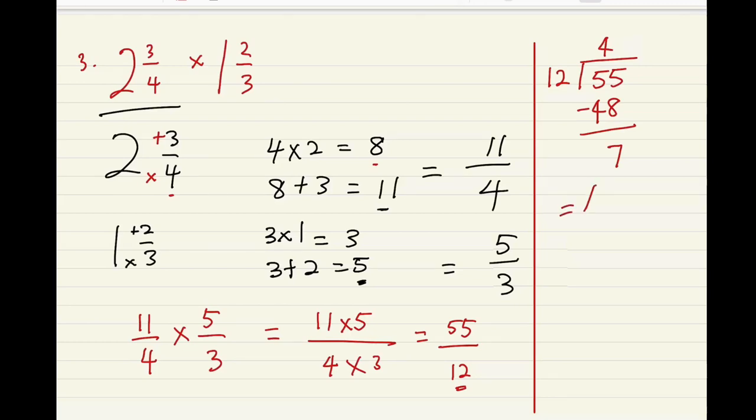Your answer is going to be 4 whole number, 7 out of 12. The 4 here is from this 4, the 7 here is the 7, and then the 12 is this 12.